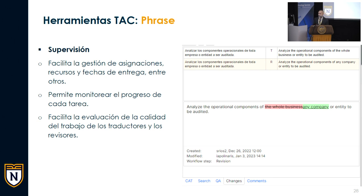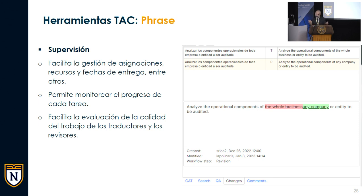También ayuda a nivel de gerencia de proyectos y supervisión: no solo facilita las asignaciones —a quién, cuáles son las fechas de entrega—, sino que permite monitorear cuánto de las tareas se ha adelantado, si hay atrasos, y facilita la evaluación de la calidad del trabajo de los traductores y revisores. En las capturas, el segmento que dice T es cómo lo tradujo la persona originalmente; el que dice R es la versión revisada; abajo puedo ver los cambios y quiénes los hicieron. Me ayuda no solo a evaluar cómo se está traduciendo, sino cuáles son las habilidades de revisión de cada persona del equipo.